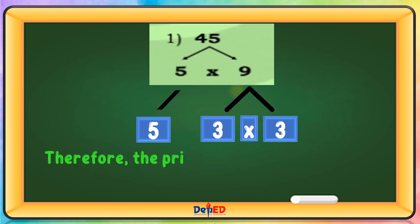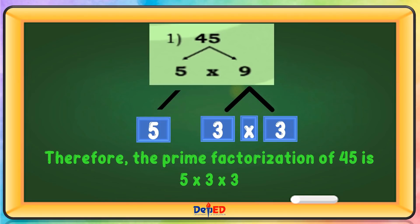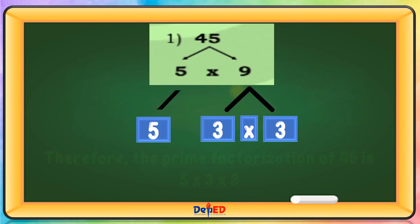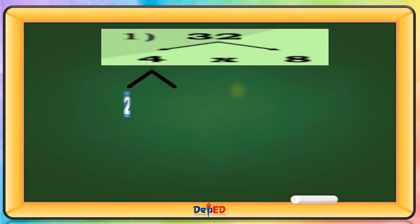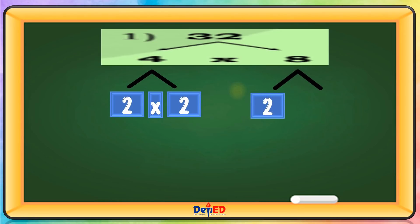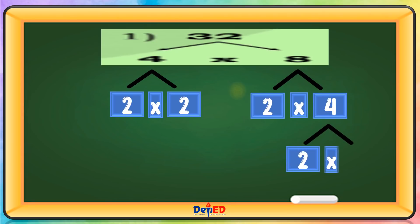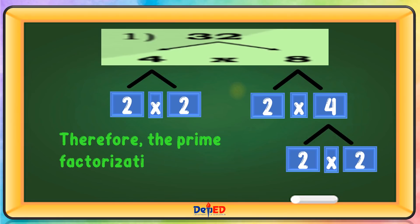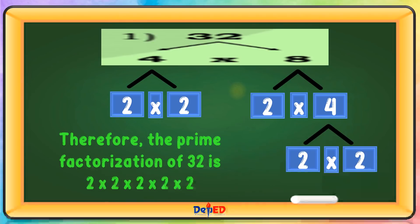Therefore, the prime factorization of 45 is 5 times 3 times 3. Therefore, the prime factorization of 32 is 2 times 2 times 2 times 2 times 2.